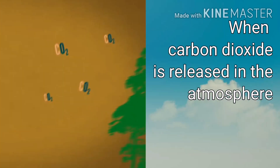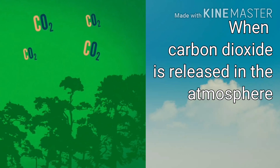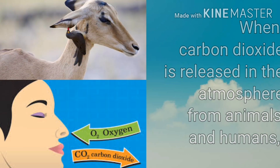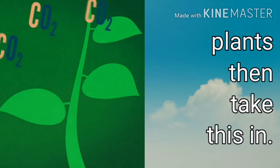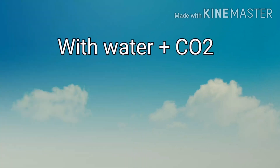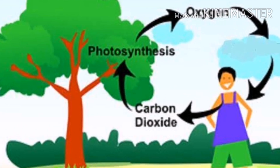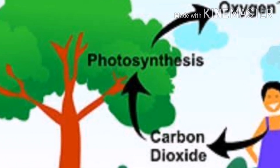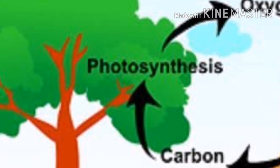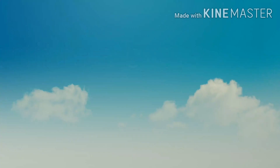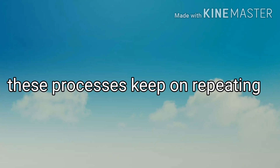When carbon dioxide is released into the atmosphere from animals and humans' bodies, plants then take this in. With water and carbon dioxide, plants again create sugar as their food. Are you familiar with this process? Yes, we are talking again about the plant's food-making process called photosynthesis. Since it is a cycle, these processes keep on repeating and repeating.